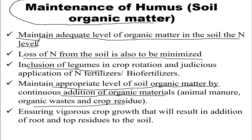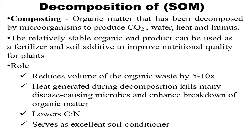Ensuring vigorous crop growth will result in the addition of root and top crop residues to the soil. These are some of the key maintenance measures we can adopt to preserve humus quality and nitrogen content.